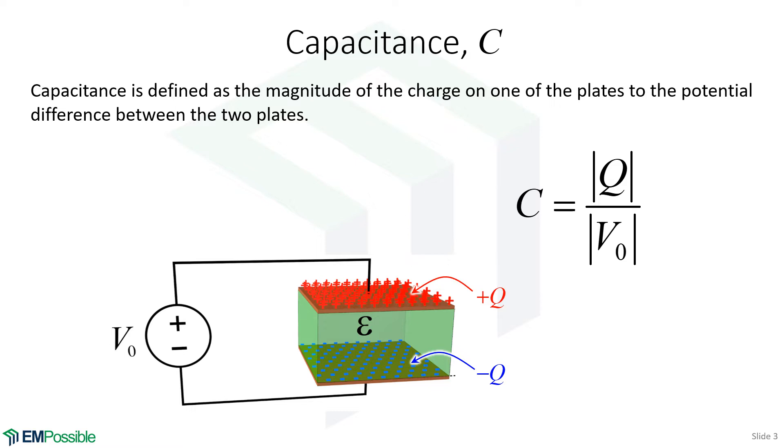Let's consider for a moment a parallel plate capacitor. We're going to have a top metal plate and a bottom metal plate, and we will apply a voltage to this. Those plates are separated by a dielectric. So at least at DC, and we're talking about electrostatics, there's no current flowing.